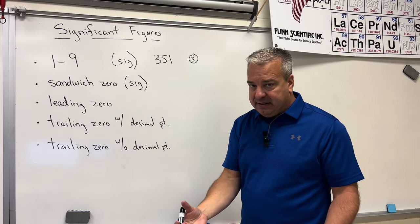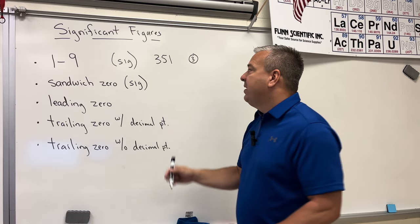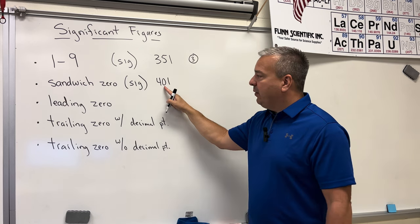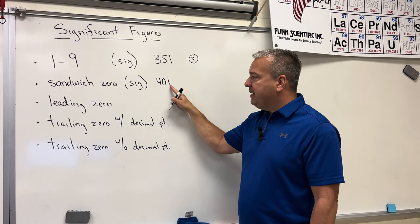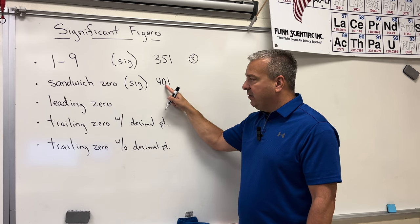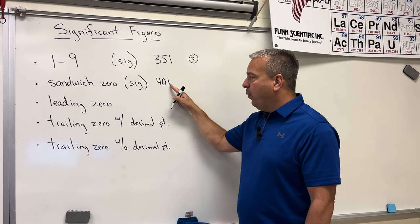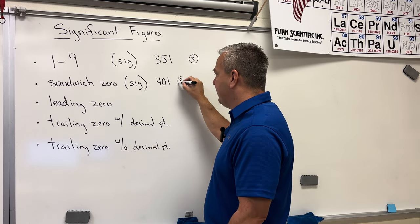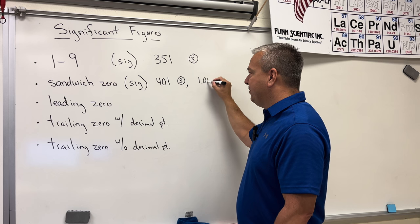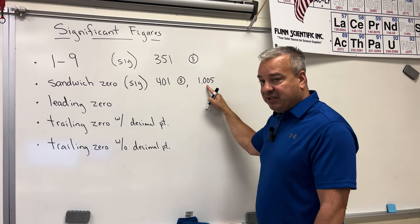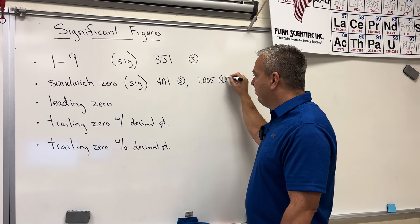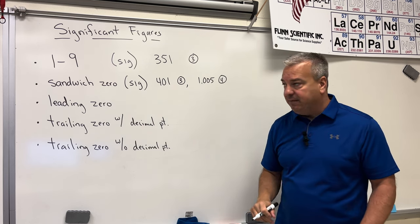What exactly is a sandwich zero? Something like 401, where the zero is sandwiched in between digits one through nine. These types of zeros do count, so 401 has three sig figs. If I had the number 1.005, these are still sandwiched zeros — sandwiched between the one and the five — so they count. There would be four sig figs there.